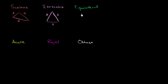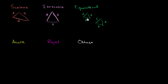An equilateral triangle, as you might imagine, is a triangle where all three sides have the same length. So for example, this would be an equilateral triangle where all sides have length 2. Or if I have a triangle where it's 3, 3, and 3 — any triangle where all three sides have the same length is going to be equilateral.